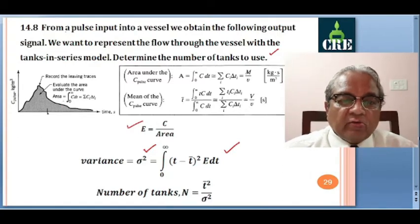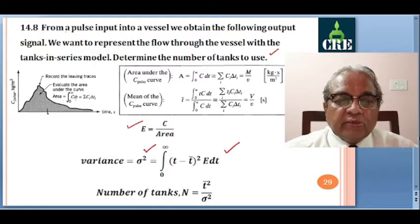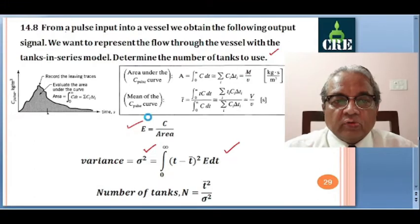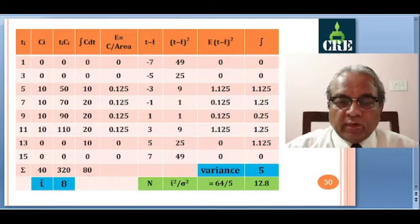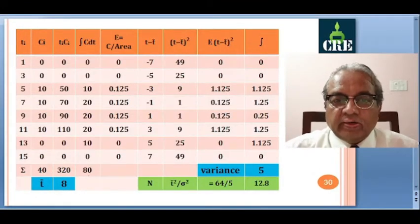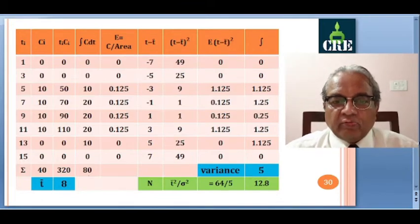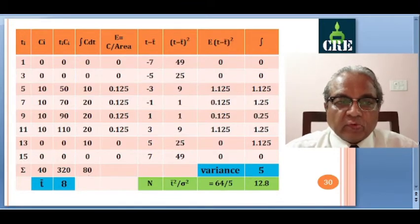So this is the C-pulse curve — the area under it is ∫₀^∞ C dt, and each C reading divided by this area gives the E values for the E-curve. Now we will analyze the given data to find T̄ and variance, and from that determine the number of tanks. The given data is Tᵢ and Cᵢ, with equal-interval readings at 1, 3, 5, 7, and so on.